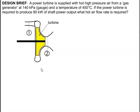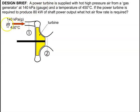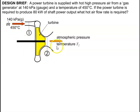We're producing 80 kilowatts of shaft power and we're not considering any losses. At point two, the gas is released into the atmosphere, so the final gas is at atmospheric pressure — zero gauge pressure — which is one bar, or 10 to the 5 pascals.